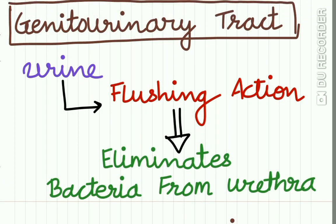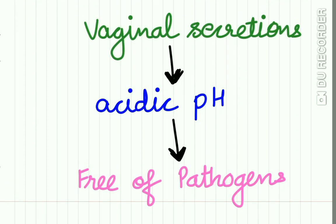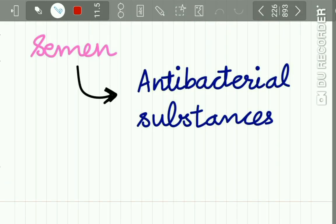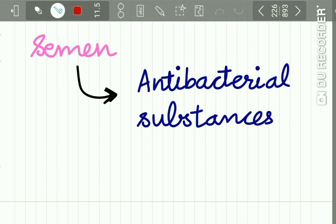In the genitourinary tract, urine has a flushing action which eliminates bacteria from the urethra. The vaginal secretions have an acidic pH which keeps the vagina free of pathogens, and semen has also been shown to contain certain antibacterial substances.